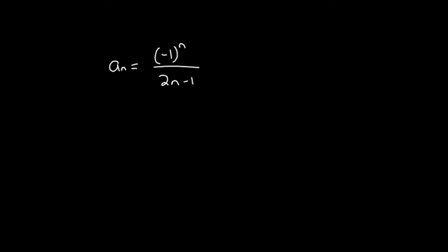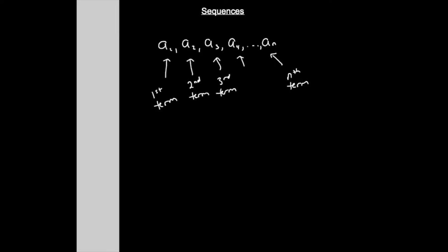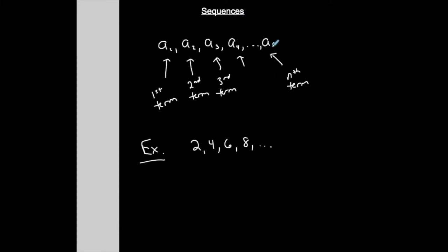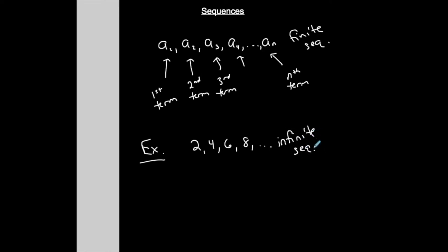Let me look at an actual sequence with a pattern. For example: 2, 4, 6, 8. Two things can happen — a sequence can be a finite sequence or an infinite sequence. Notice that this sequence ends at the nth term, so we say this is a finite sequence. But when I wrote this sequence with dot dot dot, that means the sequence is going to continue forever. I'm not going to write every single term, so this is an example of an infinite sequence. You can have either a finite or infinite sequence.